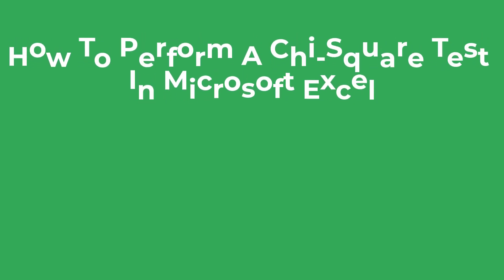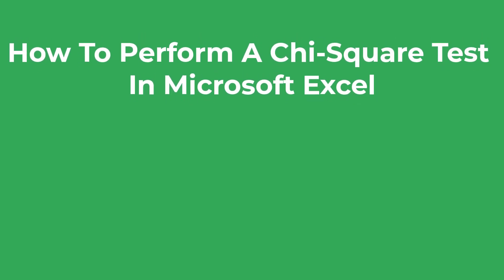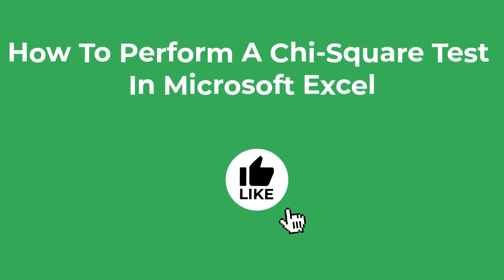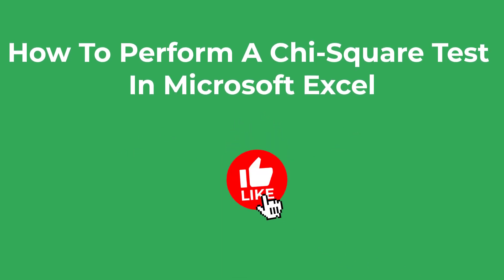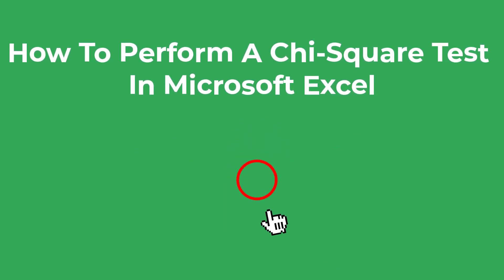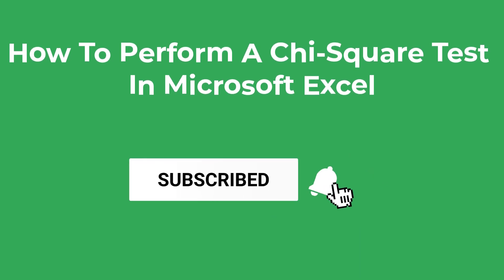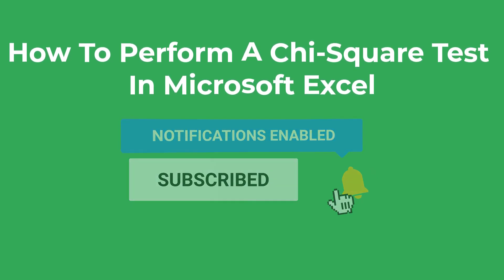In this tutorial I'm going to show you how to perform a chi-squared test of independence by using Microsoft Excel. This includes step-by-step instructions to generate a p-value. Without further ado, let's jump into Excel and get started.